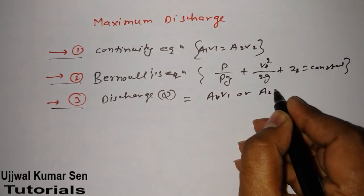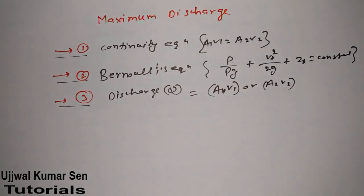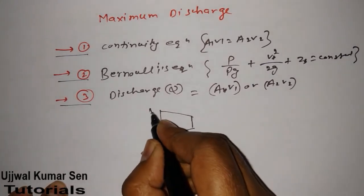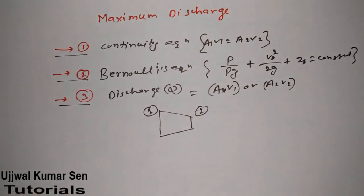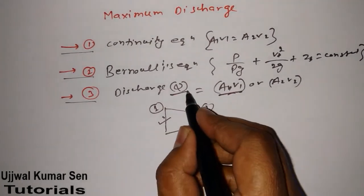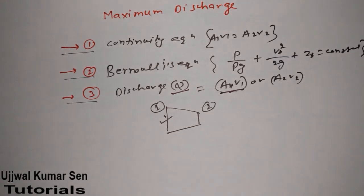Here we're talking about maximum discharge. The diagram is like this: suppose this is point 1 and this is point 2. We're using a reducer, so discharge would be maximum here. We'll use A₁V₁ for finding out maximum discharge.